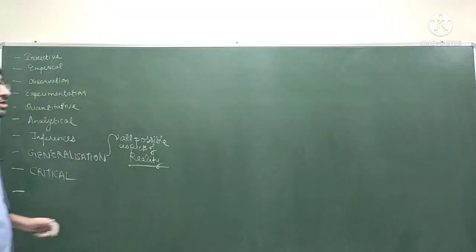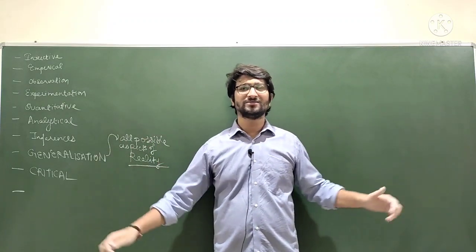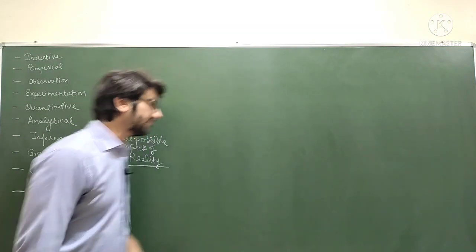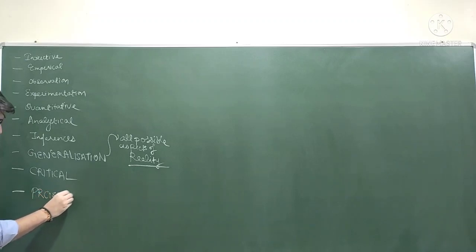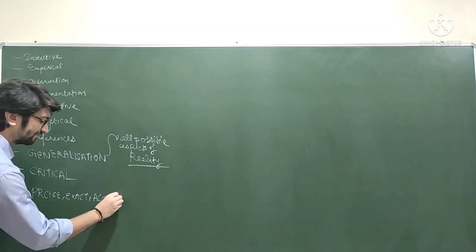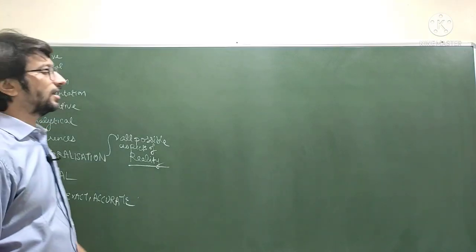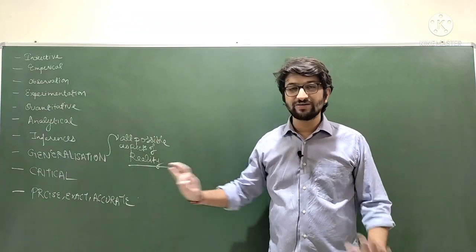The theories formed through repeated experiments tested all over the world will be precise, exact, and accurate. So these are various characteristics of scientific method that we have studied so far. We will further develop on this.